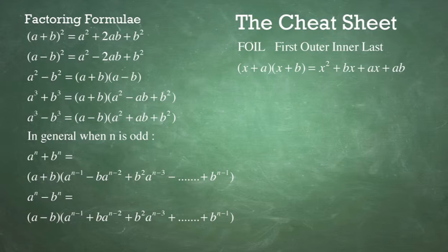Let's now talk about FOIL: First, Outer, Inner, Last. FOIL is used to multiply two factors of the form X plus A times X plus B. You take the first terms: X times X equals X squared. The outer terms: X times B equals BX. The inner terms: A times X gives AX. And the last terms: A times B gives AB.